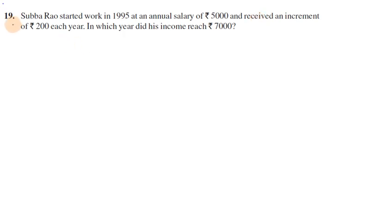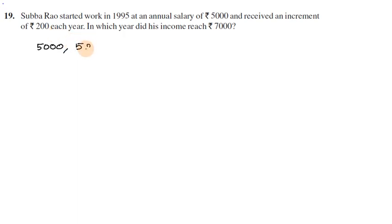Exercise 5.2, problem number 19: Subaro started work in 1995 at an annual salary of 5,000 and received an increment of 200 each year. In which year did his income reach 7,000? First year salary is 5,000, second year is 5,000 plus 200 equals 5,200, third year is 5,400 — adding 200 each year.